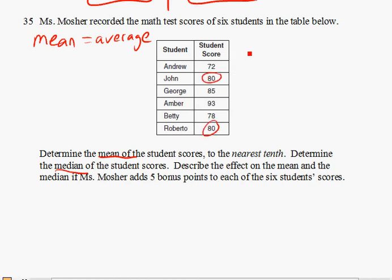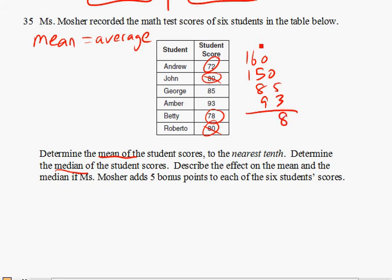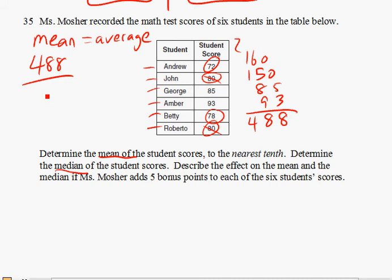We have 80 and 80 — that's 160. Then 72 and 78 — add them together you get 150. And 85 and 93 — add them together you get 178. And the total is 488. We're going to divide by the number of scores we have, which is 6 students.